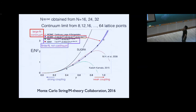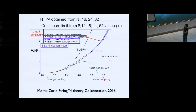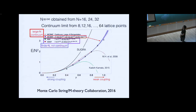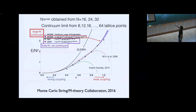A similar calculation by Catterall and Wiseman plotted energy divided by temperature. They note that some points are not trustable, and looking at the reliable points, simulation results approach the supergravity curve very nicely. We got quantitatively good results. In 2016, the Monte Carlo String/M-theory collaboration — including Evan Berkowitz, Enrico Rinaldi, and others — worked to see the low-temperature region more carefully. In previous work we didn't take the large-N and continuum limits, but Evan and Enrico did all the hard work for this paper and actually took those limits.